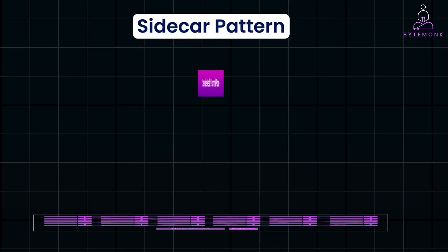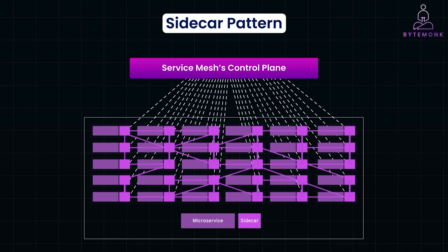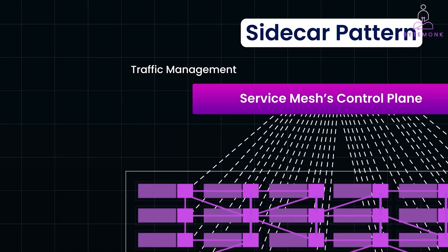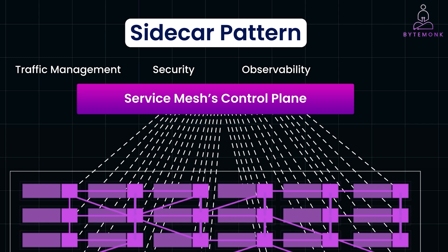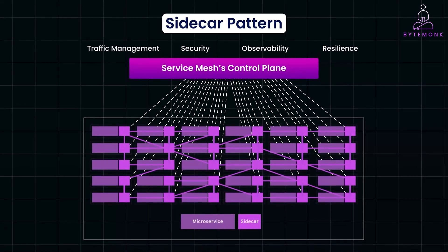The sidecar pattern is a core component of service mesh architecture. A service mesh is a dedicated infrastructure layer for handling communication between microservices. In a microservices architecture, different services need to talk to each other over the network, but managing this communication can become complex as the number of services grows. A service mesh simplifies this by taking care of key features like traffic management — such as routing and load balancing between services — enforcing secure communication with mutual TLS authentication and authorization, collecting metrics, logging, and tracing service-to-service communication, and also handling retries, circuit breaking, and failover to improve service reliability.